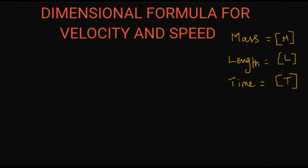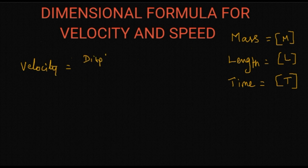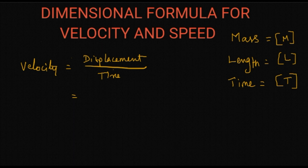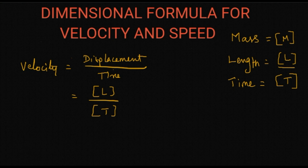We are going to find the dimension formula for velocity and speed — they have the same dimension formula. Velocity is equal to displacement by time. Displacement means distance, and it is measured in terms of length L, so its dimension is L, and time is in terms of T.